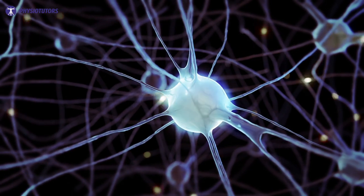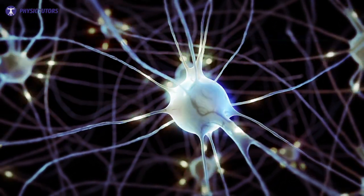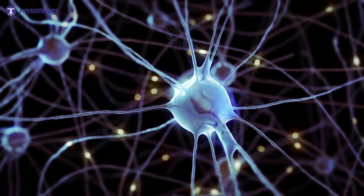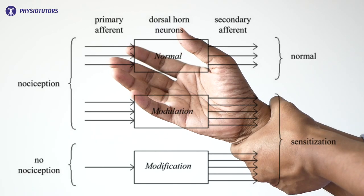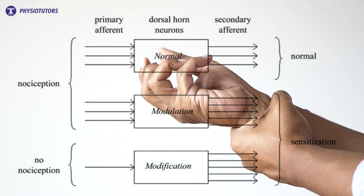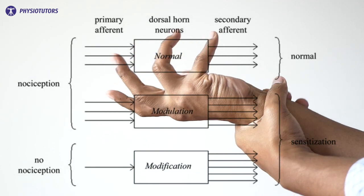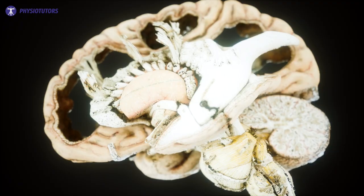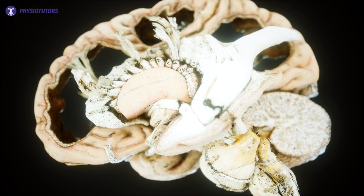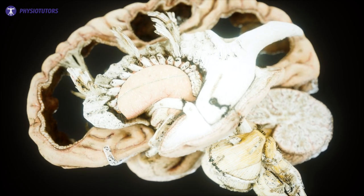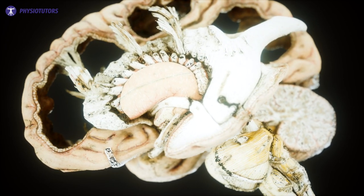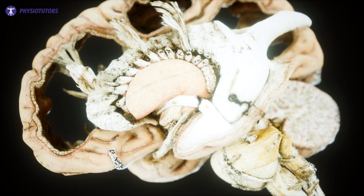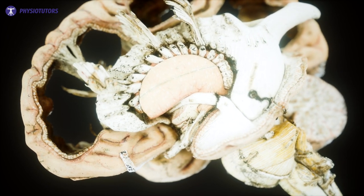Hi and welcome back to Physiotutors. Central sensitization is basically an alteration in the processing of the central nervous system. It is characterized by widespread hypersensitivity. Nociceptive information gets augmented rather than inhibited. Different regions of the brain involved in pain sensations are active above average — examples are the insula, the anterior cingulate cortex, and prefrontal cortex. Other regions normally not active for sensation, such as various brainstem nuclei, seem to be active as well.